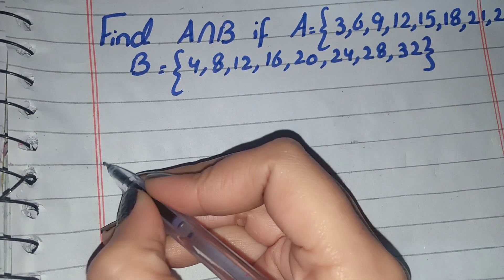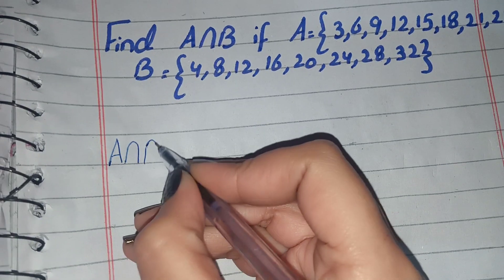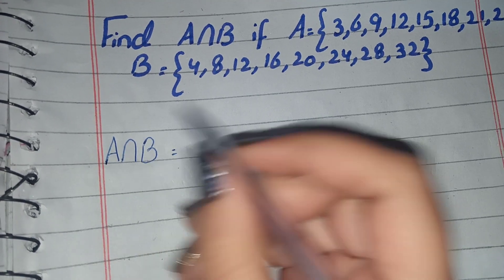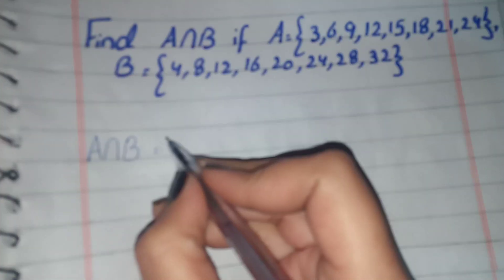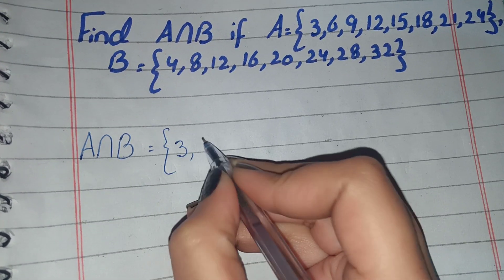First, we will write A intersection B. We have to write the A elements which are from A set.